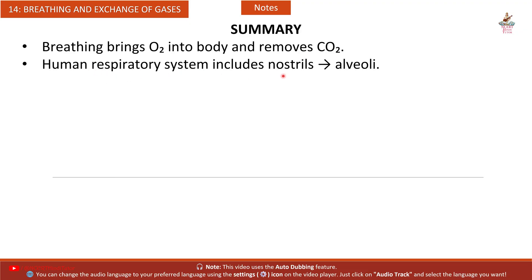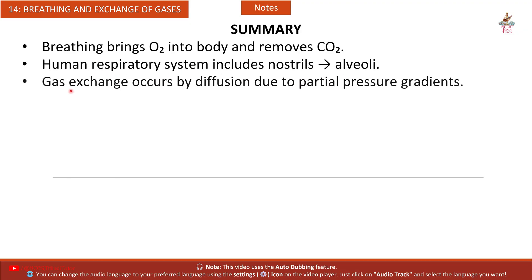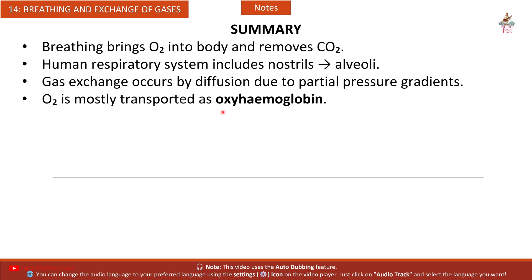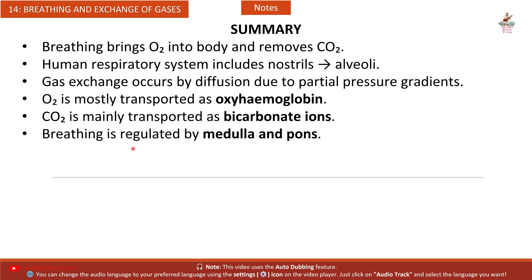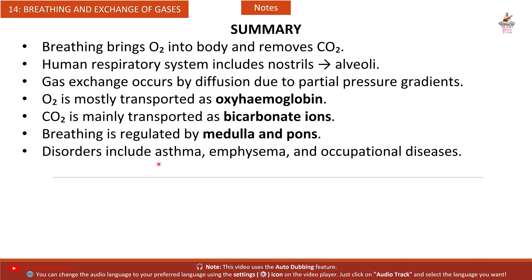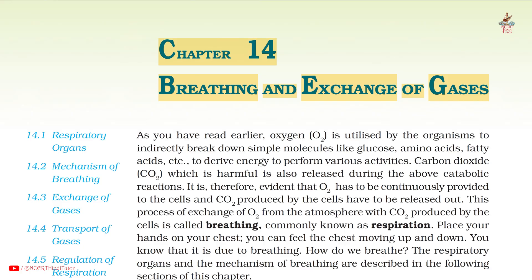Summary: Breathing brings O2 into the body and removes CO2. The human respiratory system includes nostrils to alveoli. Gas exchange occurs by diffusion due to partial pressure gradients. O2 is mostly transported as oxyhaemoglobin; CO2 is mainly transported as bicarbonate ions. Breathing is regulated by the medulla and pons. Disorders include asthma, emphysema, and occupational diseases. We have completed notes and summary of Chapter 14: Breathing and Exchange of Gases.